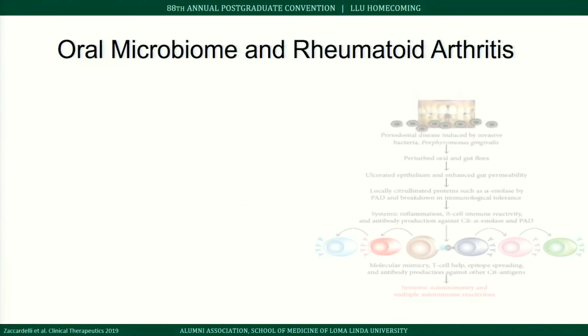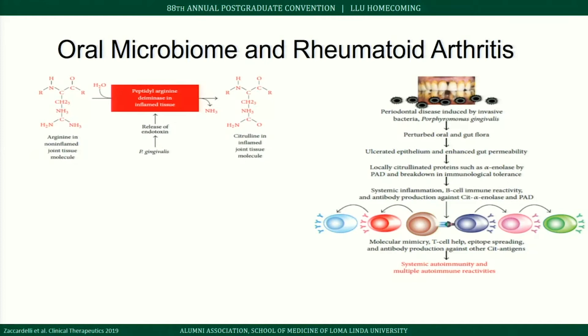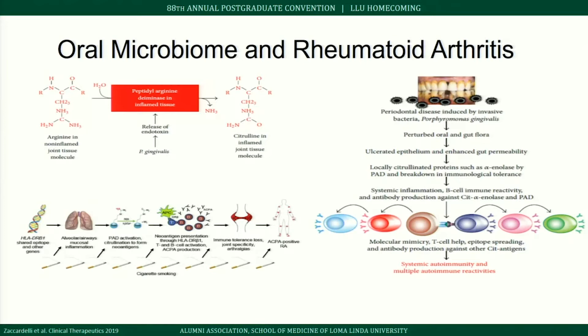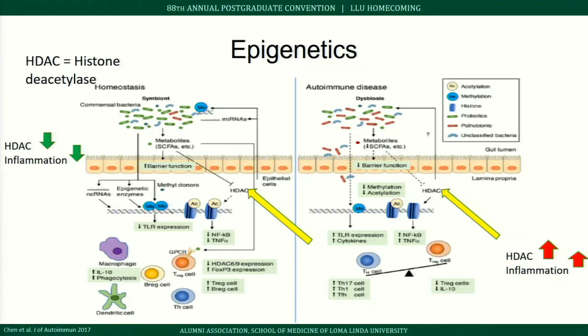Not only the gut and intestinal microbiome but also the oral microbiome are involved. Epigenetic gene expression is also important in inducing autoimmune disease. In rheumatology, histone deacetylase (HDAC) controls epigenetic expression. Eating dietary fiber increases short-chain fatty acids, which can block HDAC and lead to an anti-inflammatory cascade.